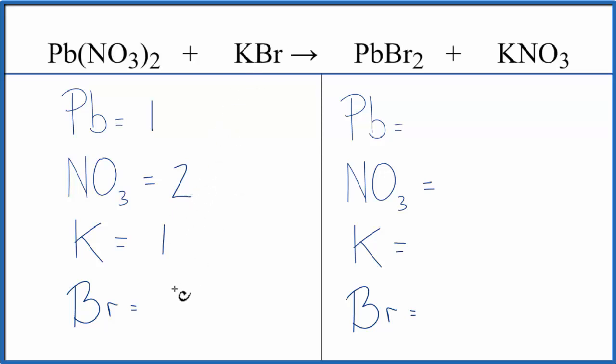We have one potassium and one bromine. On the product side, one Pb, one nitrate, one potassium, and two bromines.